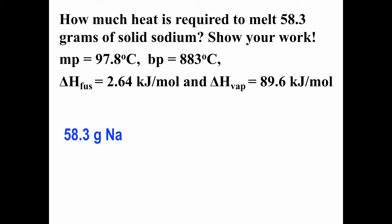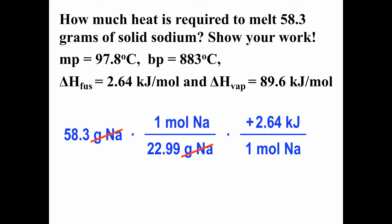This is a fairly straightforward conversion from one set of units to another. We start with 58.3 grams of sodium and convert grams to moles because our delta H of fusion is in kilojoules per mole. Then since each mole of sodium requires 2.64 kilojoules in order to melt, that's a positive sign on the delta H value because energy is needed. We do the calculation and get plus 6.69 kilojoules. That means 6.69 kilojoules of energy is needed to melt 58.3 grams of solid sodium.